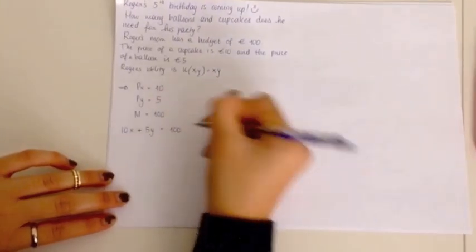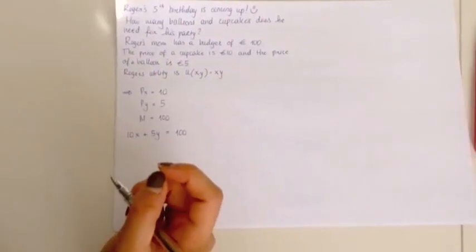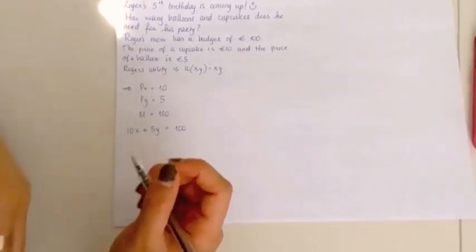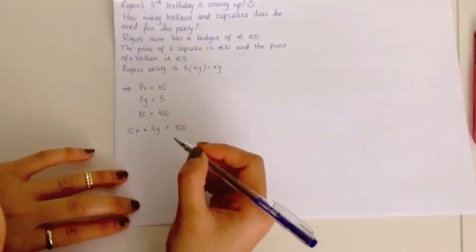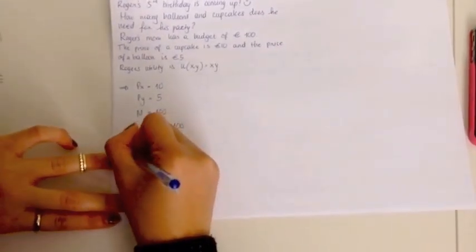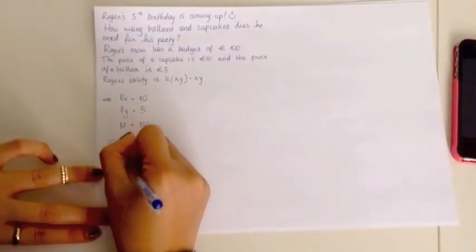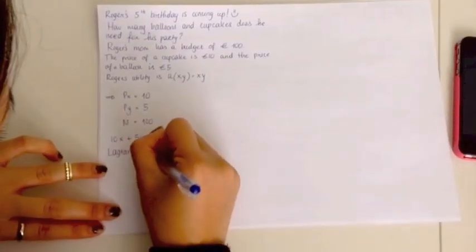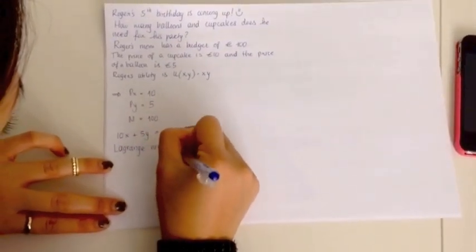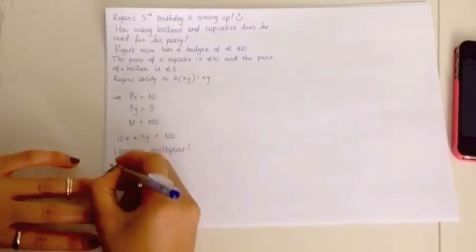However, because we are going to use the Lagrange multiplier, we need to rewrite this equal to 0. So, you end up with 10X plus 5Y minus 100 equals 0.